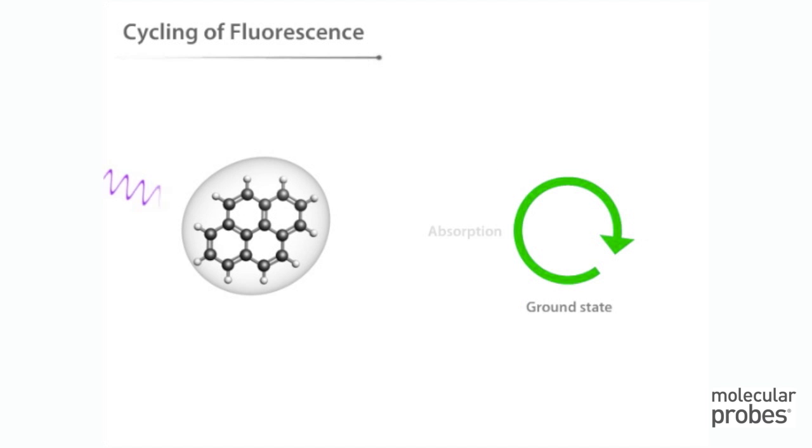A fluorophore can repeatedly undergo the fluorescence process, in theory, indefinitely. This is extremely useful, because it means that one fluorophore molecule can generate a signal multiple times. This property makes fluorescence a very sensitive technique for visualizing microscopic samples. Even a small amount of the stain can be detected.